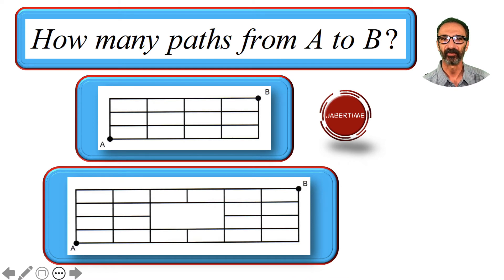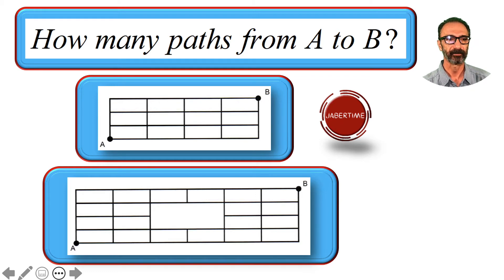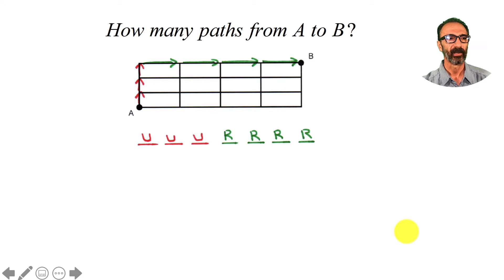Today we're going to count how many ways you could go from A to B — how many different paths you could take. I have two graphs; the first one is easier than the second one, so I'm going to start with the first one and then move to the second.